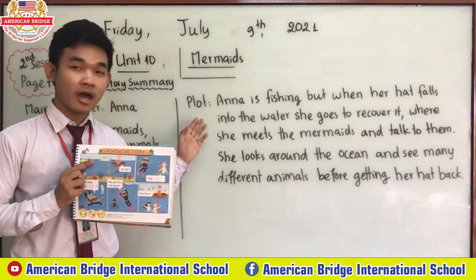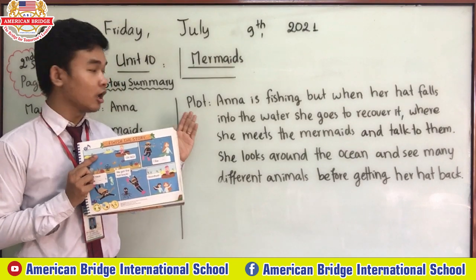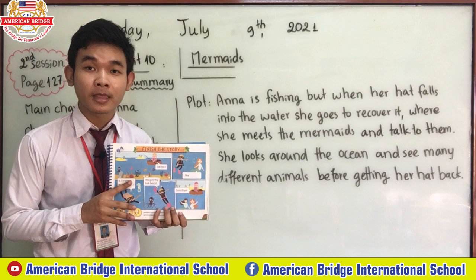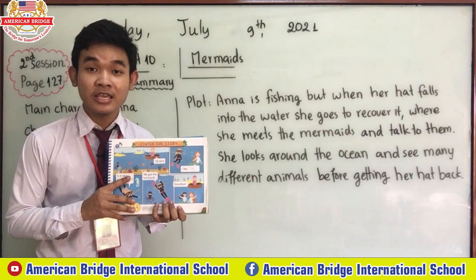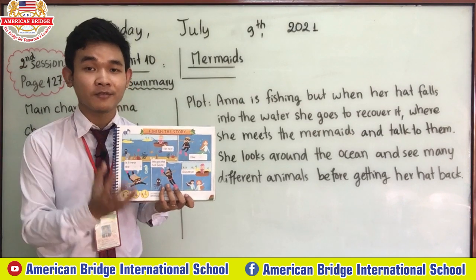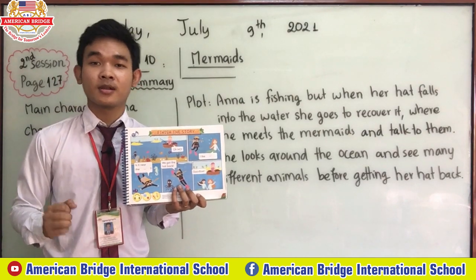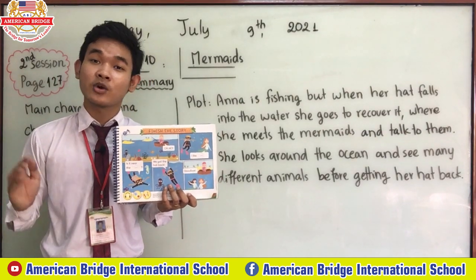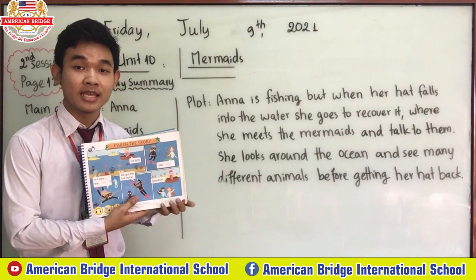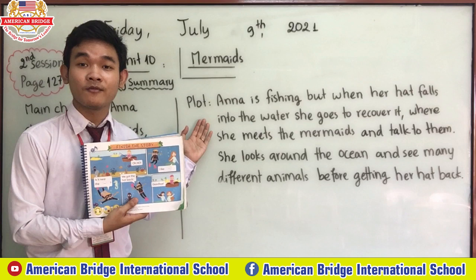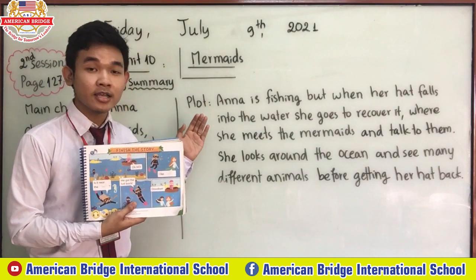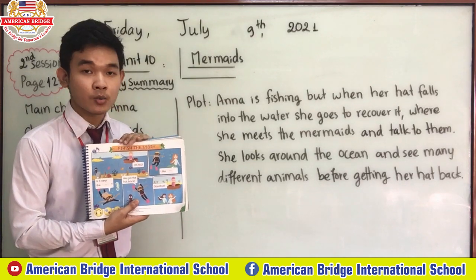Now let's look at our plot. What is plot? It is the events of our story — what happened first, what happened second, what happened next, and what happened last. That's what we call plot.